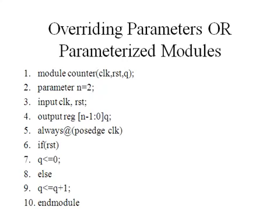Let us discuss overriding parameters or parametrize modules. Before getting into what parametrize modules are, let us say we are trying to write a counter, 3 bit up counter. So if you look at line 4 for 4 bit up counter, what we do is 3 colon 0, that is the vector size.